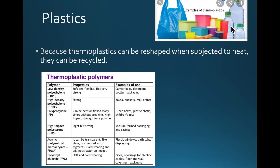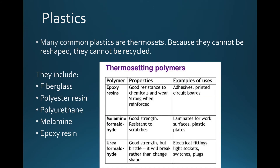Examples of thermoplastics include water bottles, plastic bags, and other plastic containers. You also have lunch boxes, bowls, buckets, pipes, coverings for electric cables, and floor and wall coverings. These can be recycled because they can be subjected to heat and reshaped. Thermosetting plastics, on the other hand, are set and cannot be modified, so they cannot be recycled.